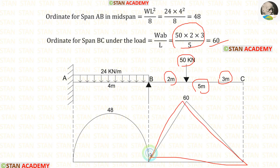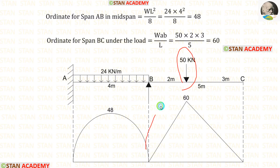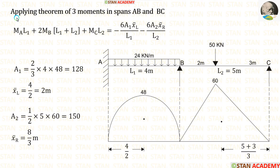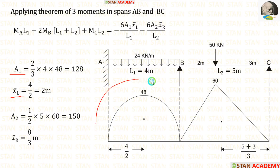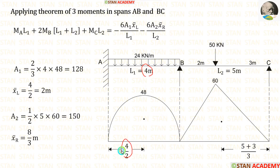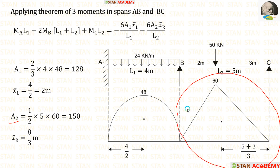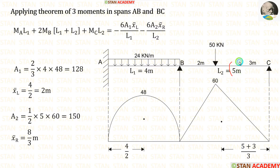Using that, we can make the diagram. For a point load, the bending moment diagram will be in the shape of a triangle. Now let us apply the theorem of three moments to spans AB and BC. We have to calculate area 1, X-bar left, area 2, and X-bar right. Area 1 we have already calculated; X-bar left = 2 meters (symmetrical diagram, 4/2 = 2). For area 2, this is a triangle. Area = (1/2) × breadth × height = (1/2) × 5 × 60 = 150.